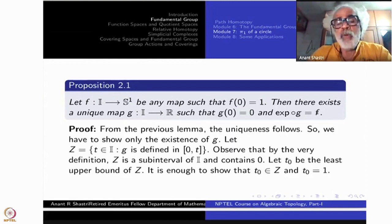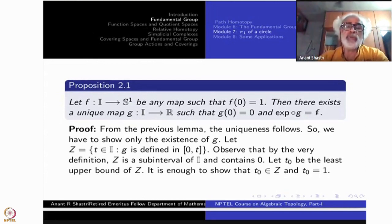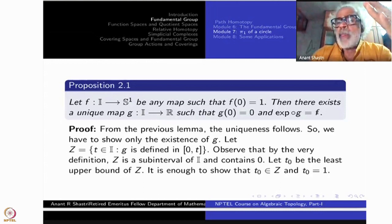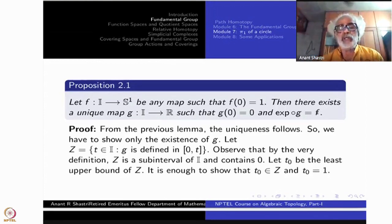Let us begin how we are going to do this, but complete proof we will do next time. So how are we going to do this? From the previous lemma, the uniqueness follows. This is what I just told you. There is a unique map. Suppose there is one, then another one will be differing by this one, by an integer. But I have fixed that G(0) equal to 0. So that additive integer n must be 0. That means G₁ minus G₂ is 0. This means G₁ is equal to G₂. That's the uniqueness. So we have to show only the existence.